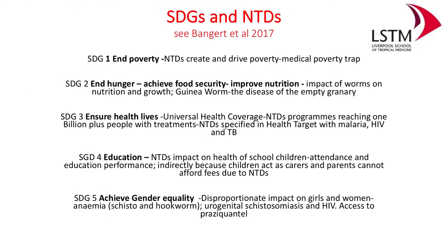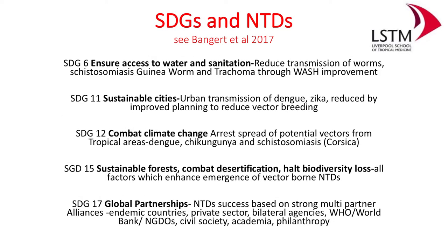What I've done here — and it's in one of the papers I'll give you with Matthew Bongert at WHO — is identify the links between all the Sustainable Development Goals and the Neglected Tropical Diseases. They link to hunger, they link to obviously healthy lives, they link to education because of the impact of worms on the ability to learn and grow and develop. There are issues around equality and disproportionate impact, particularly schistosomiasis on females, and particularly urogenital schistosomiasis and its linkage to HIV.